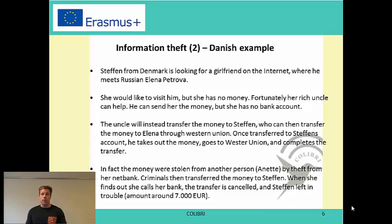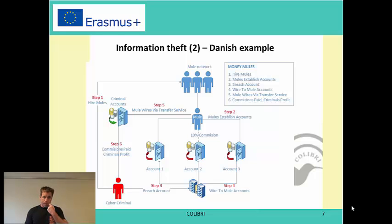What really happens is that Steffen afterwards discovers that even though he was waiting for the money to be on his account before transferring it, those money were actually stolen — stolen from another Danish web bank account — so he lost all the money. This illustrates what is called a mule, because every time you make this kind of cybercrime where you are transferring money from one bank account to another, it's traceable as long as it's in electronic form. So you need someone who will take out the money physically and go to Western Union in an operation which cannot be traced back. These are the mules, and in this situation Steffen becomes a mule.